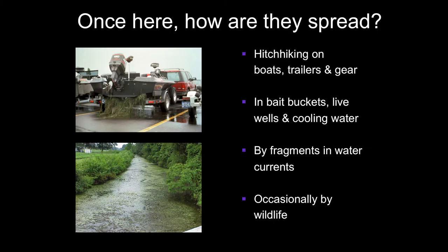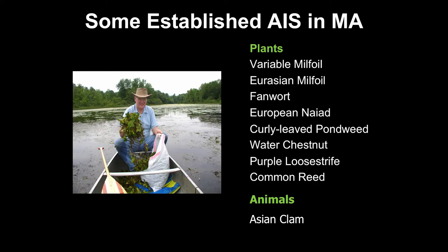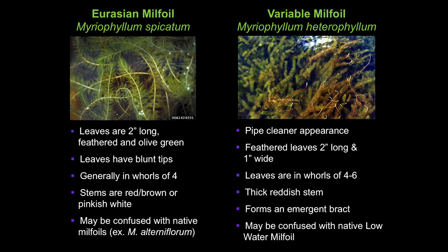Wildlife can also spread invasive plants. I'm going to go through a handful of the common invasives we deal with in Massachusetts. Two of the most common are Eurasian milfoil and variable milfoil — probably the number one plants we deal with in the state. Eurasian milfoil tends to be more common in the western part, in the alkaline waters there, but we do find it in Eastern Mass as well. Variable milfoil, on the other hand, doesn't seem to like those alkaline, calcium-rich, high-pH lakes in the western part of the state.